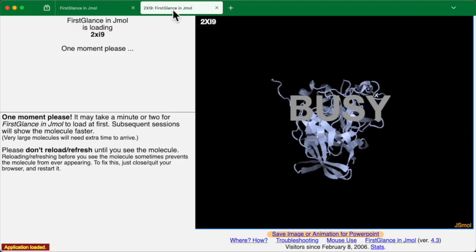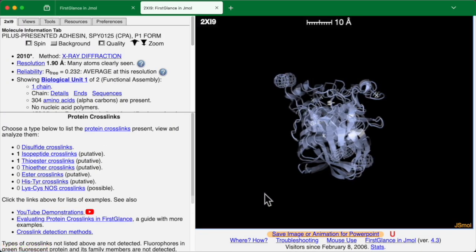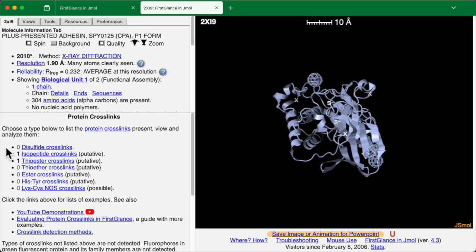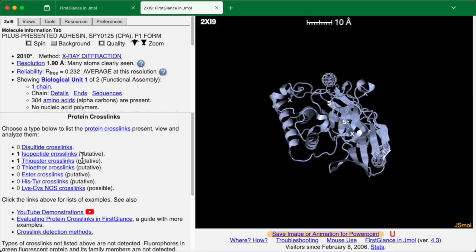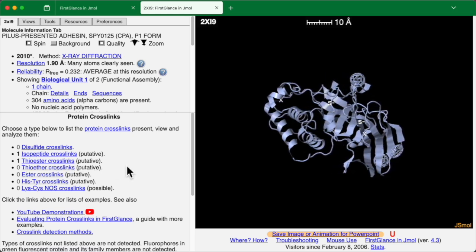A new browser tab opens and it says right away, unusual protein crosslinks may be present. OK to list them. I'll press OK. Now we see a list of crosslinks indicating one isopeptide and one thioester.